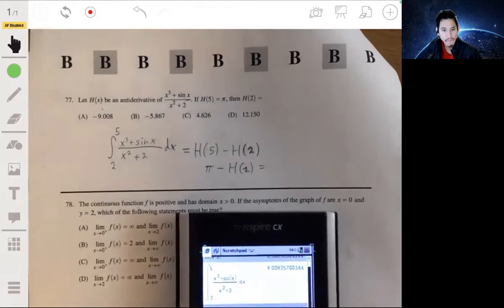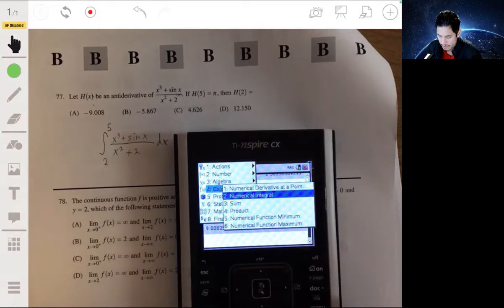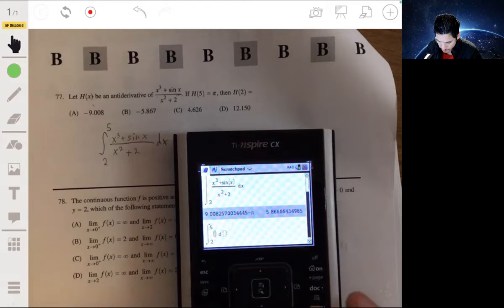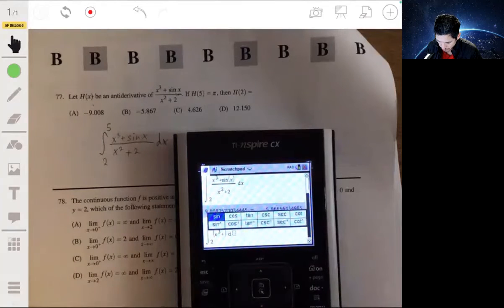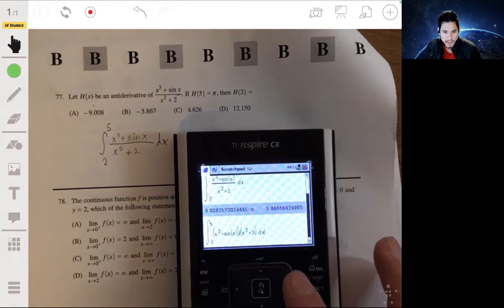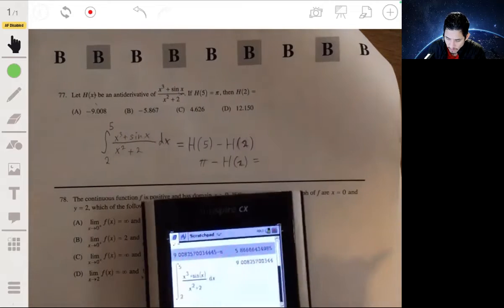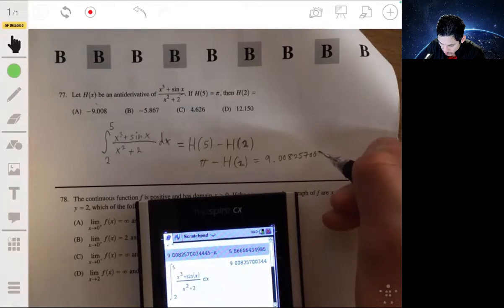Let me just do it again because you need pointers on how you do this. So I'm going to go to menu, calculus, numerical integral from 2 to 5, open parenthesis x cubed plus sine of x divided by x squared plus 2. I'm not sure, you're making mistakes.